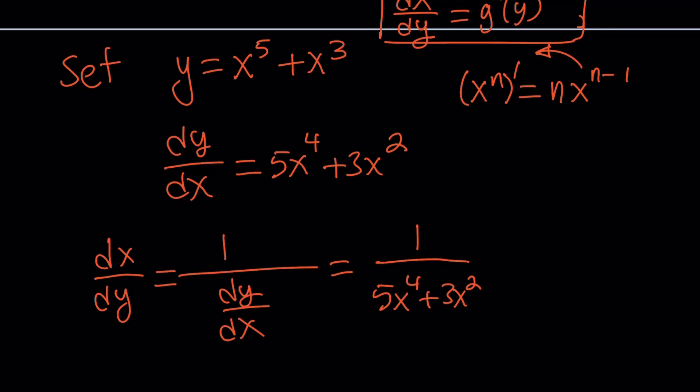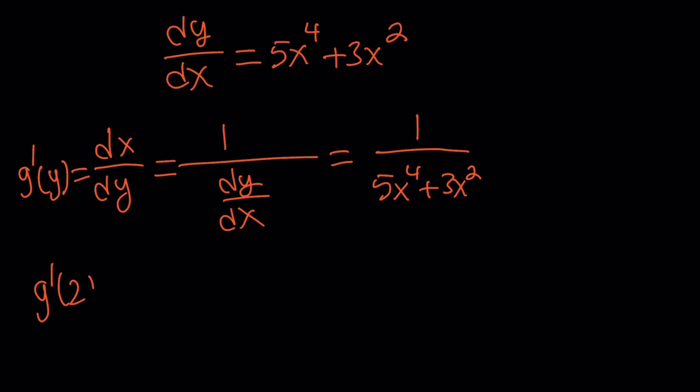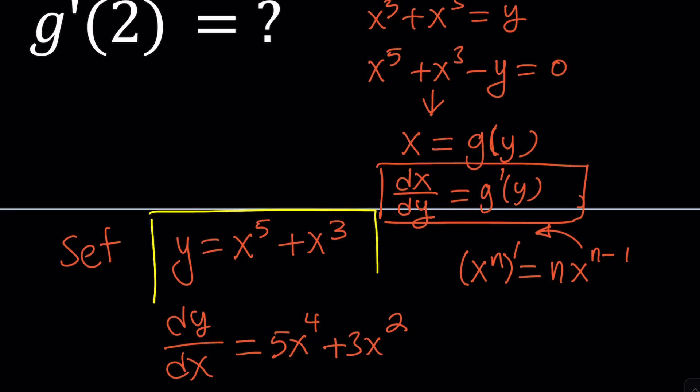But we have to be careful. We found the derivative of g at y, so this is g'(y). We're supposed to evaluate g'(2), so we must replace y with 2. But you don't have y in the expression - it contains x in reciprocal form. If y = 2, then y must be 2. Can you find the x value from here?